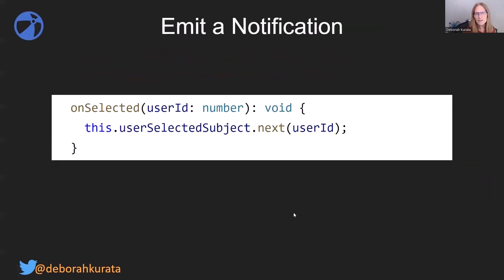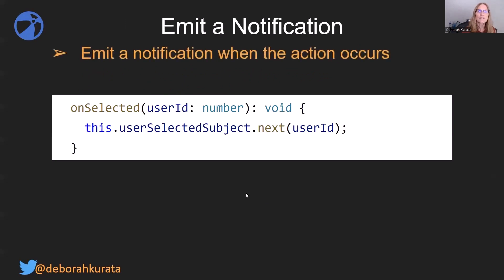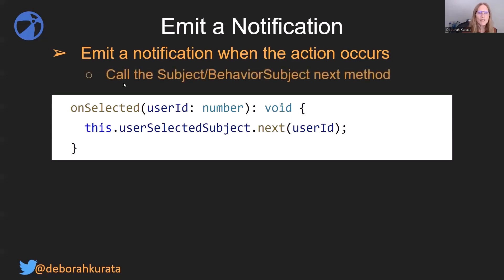Our second step is to emit a notification. In our same service, we can emit a notification when the action occurs. We do that by calling the subject or BehaviorSubject's next method. When we get a new user ID, we pass it in to next, and next emits that into the subject.